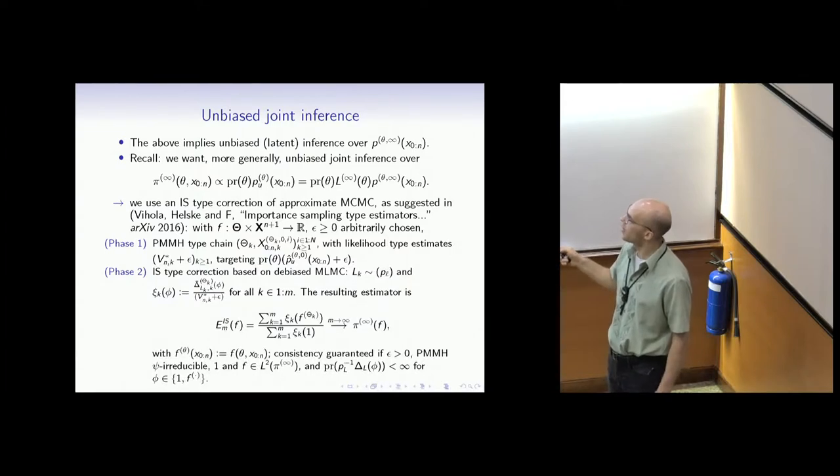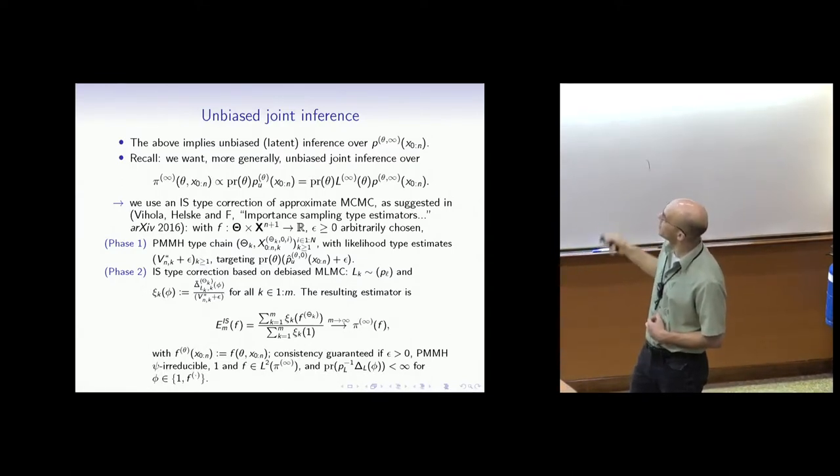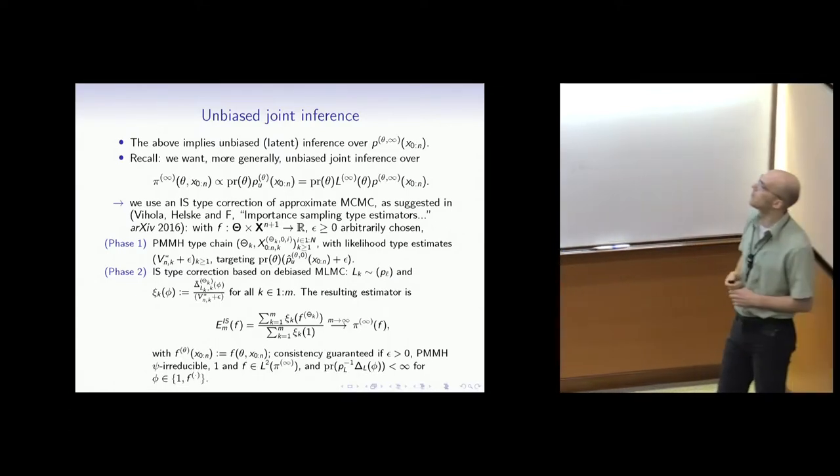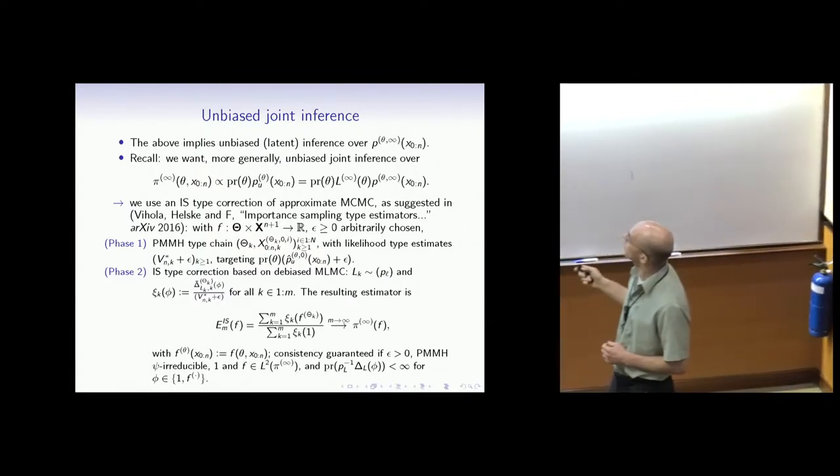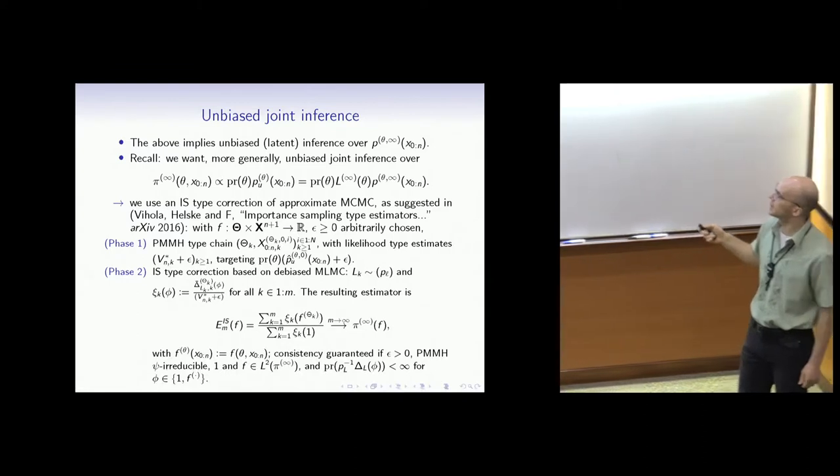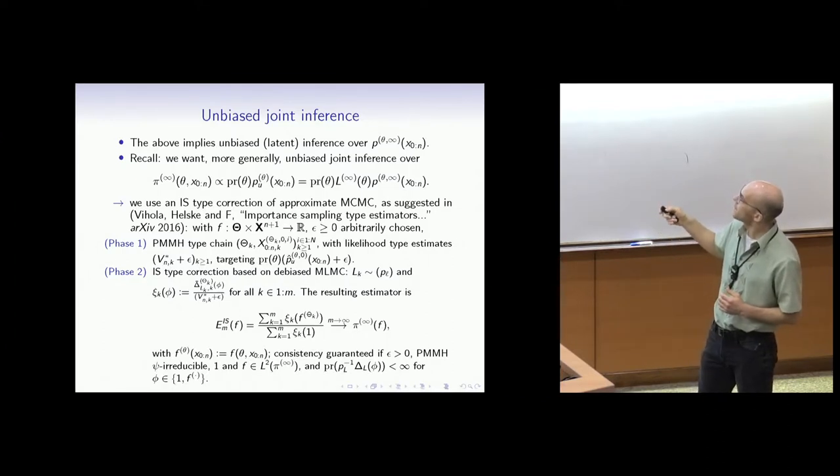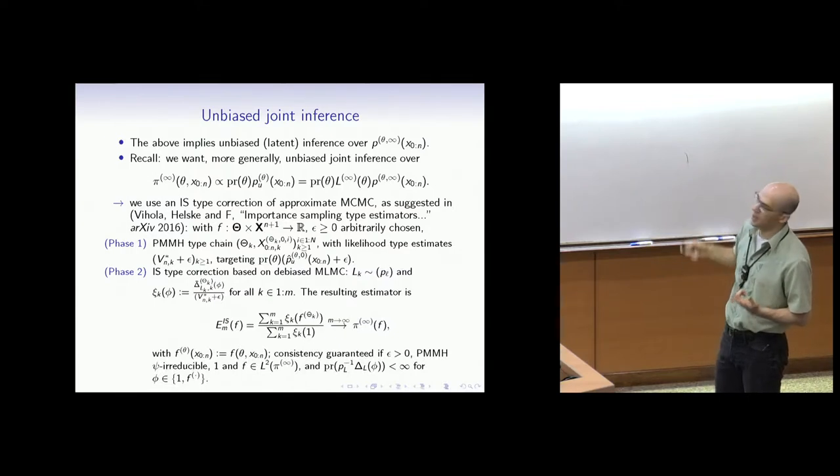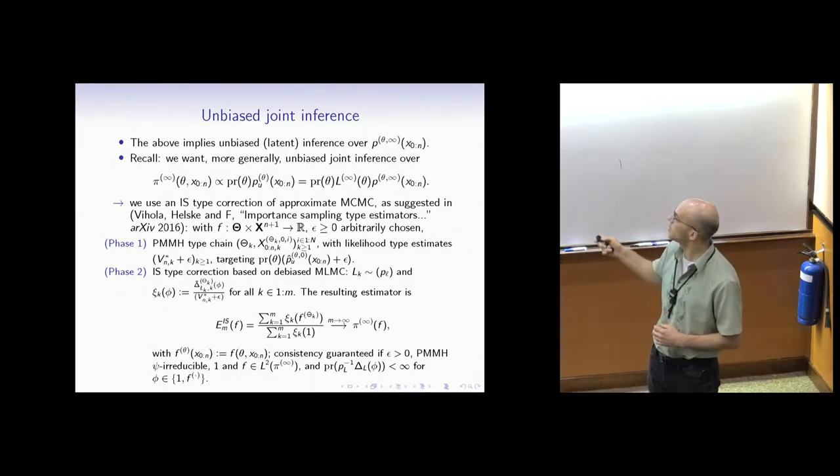In a paper from 2016, we can actually use an IS type correction where the weights can be positive or negative. F is now a function on the joint space and epsilon is a constant greater than or equal to zero. It's arbitrary - for simplicity you can take epsilon to be zero. The first phase we run a PMH targeting a coarse level - the zeroth level - so it's a standard PMH with proposal as your choice. The nice thing about the first phase is that it's targeting a coarse level, so it's very inexpensive to simulate. Also, burn-in is easy - it's inexpensive to run burn-in because we don't need to calculate these expensive delta randomized particle filters in the second phase.